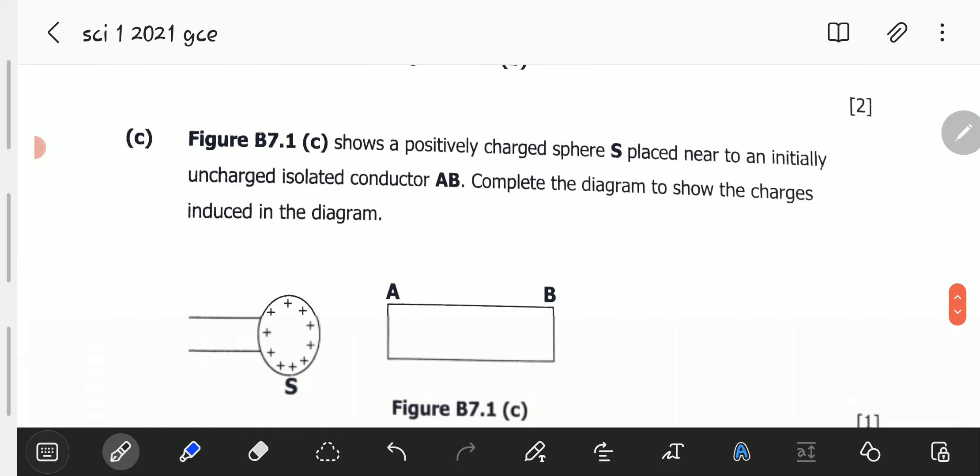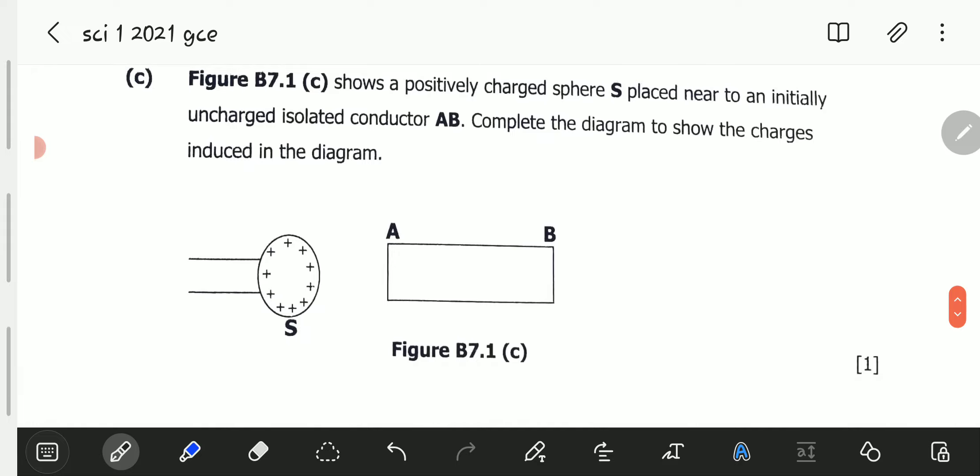We go to part C. Figure B7.1(c) shows a positively charged sphere placed near to an initially uncharged isolated conductor AB. Complete the diagram to show the charge induced in the diagram. The rule of thumb is that the charge that is going to be near the sphere should be the charge opposite to the charge that the sphere has. So if the sphere is positively charged, the side nearest to the sphere should have a negative charge and the side farthest from the sphere will have positive charge.